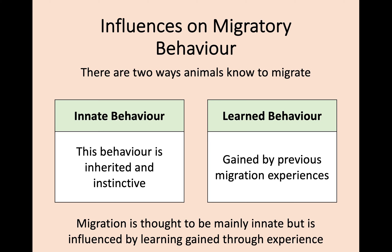There are two ways that animals know how to migrate. The first is innate behaviour — inherited and instinctive, so you're born with the knowledge that when temperature reaches a certain point, you fly south, for example. The other is learned behaviour, where you gain experience by going through migrations, following your flock or other members of your species, and figuring out when to go, why, and how far. Migration is thought to be mostly innate — animals have an inbuilt need to migrate when conditions are challenging — but it is also influenced by learning through experience.